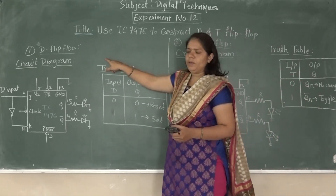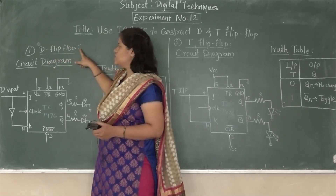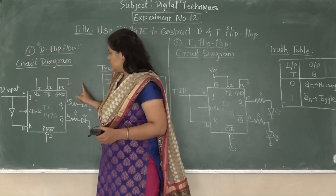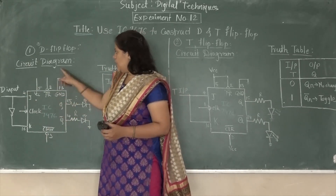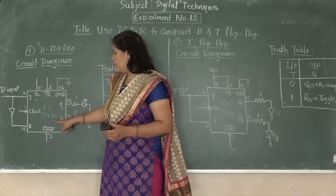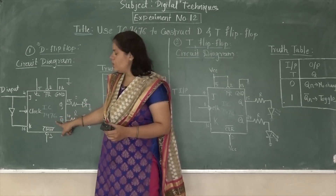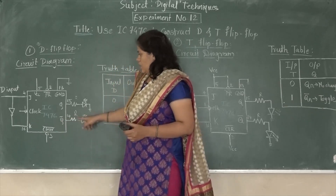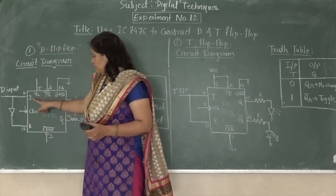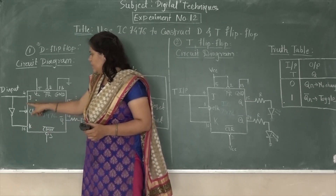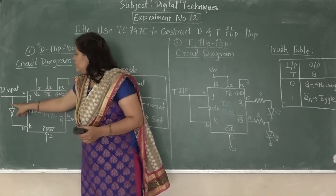First we will see the D flip-flop. D is nothing but the delay flip-flop, also called as a delay flip-flop. This is the circuit diagram of this delay flip-flop. The IC used for this flip-flop is 7476, which is also used in the JK flip-flop. The difference is only in the J and K input side — one NOT gate is connected, which is used as an inverter.